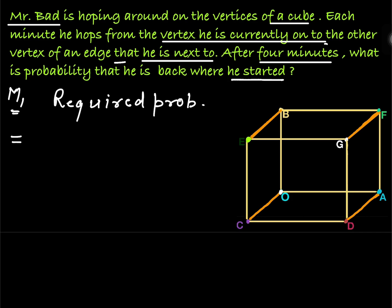So when he is at O, he has three possibilities. He can move towards A, he can move towards B and towards C. After reaching A, he has three possibilities. He can move towards O, he can move towards F, and towards D.